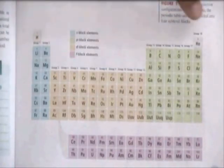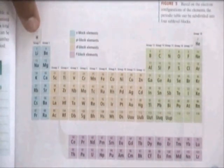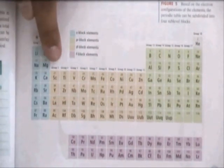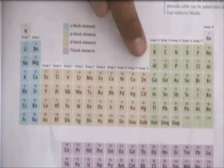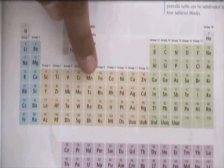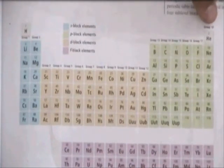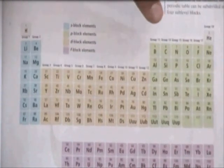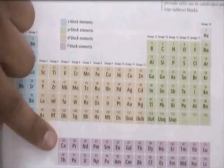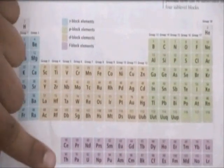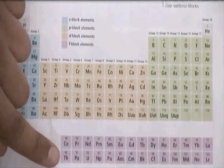Groups 1 and 2 and elements helium and hydrogen only go up to the sub-level S. Groups 3 through 12 only go up to sub-level D. Groups 13 through 18 excluding helium only go up to sub-level P. The lanthanides and actinides only go up to sub-level F.